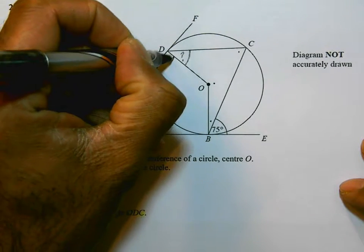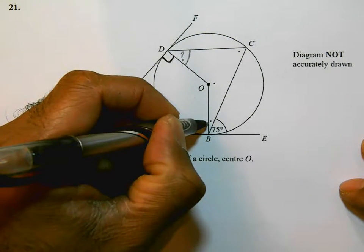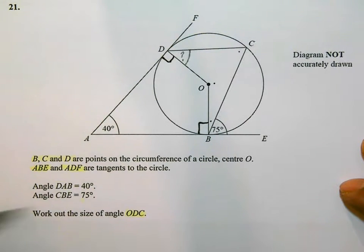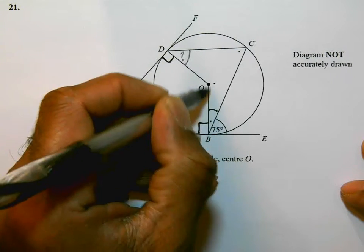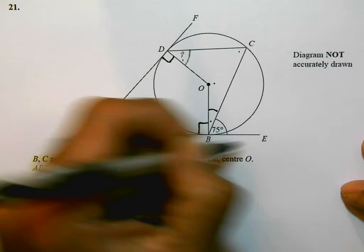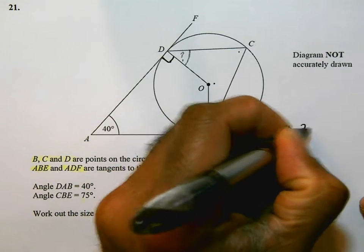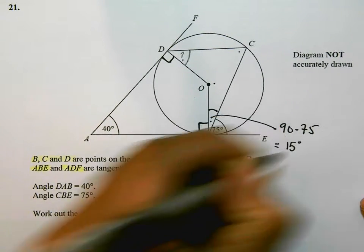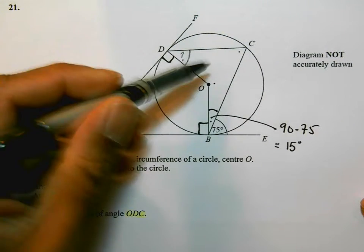So I'm going to use that fact. What I'm going to do first of all is indicate that this is a right angle because a tangent and a radius are at right angles to each other. And this is also a right angle. As a result, I can work out this angle here. Because this whole angle OBE is 90 degrees. So this angle here is going to be 90 take away 75, which is 15 degrees.